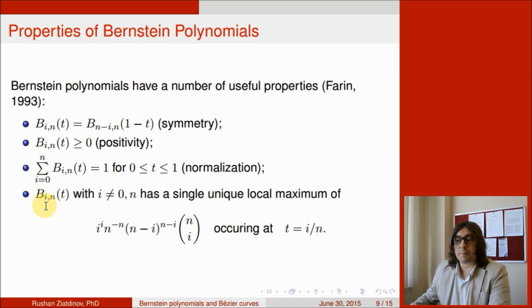The next interesting property: for i not equal to 0 or n, there is a single unique local maximum of this value occurring at t equal to i over n. So Bernstein polynomial has unique local maximum at this point.